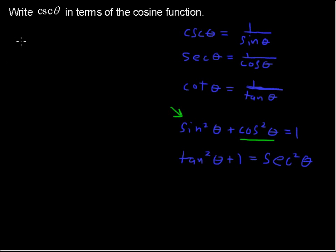cosecant is 1 over sine, so let's just start there. Cosecant of theta - and I'm not going to rewrite this left-hand side again, we'll just have that over there - this is going to equal 1 over sine of theta.